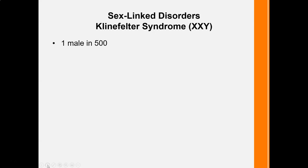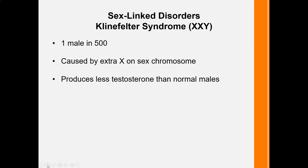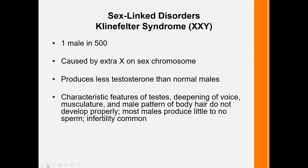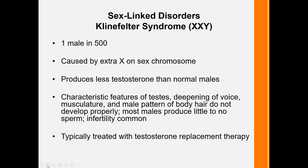Other sex-linked disorders are due to an extra X or extra Y. Klinefelter syndrome is XXY — males with an extra X chromosome, occurring in 1 in 500 males. That extra X reduces testosterone in normal males, and during puberty the characteristic features of maleness — testes development, deepening of the voice, musculature, and male pattern body hair — do not develop properly. Most of these males tend to be infertile due to little or no sperm production. If caught early enough and treated before puberty with testosterone replacement therapy, some side effects can be reduced.